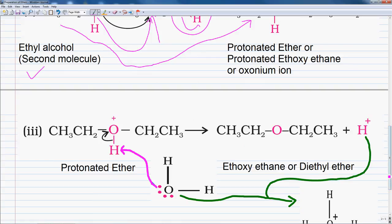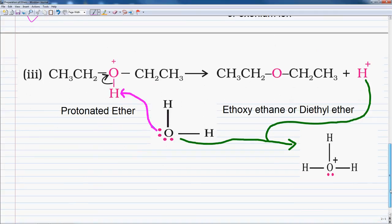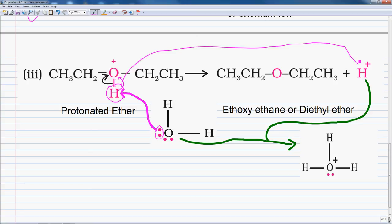Now in the last step of the reaction, in the protonated ether, hydrogen is covalently bonded with oxygen. As you can see, this hydrogen is covalently bound with this oxygen. Then this water molecule attacks the protonated ether. The oxygen of water has two electrons, and this hydrogen gets released as an H+ ion — that is, hydrogen is released as a proton.